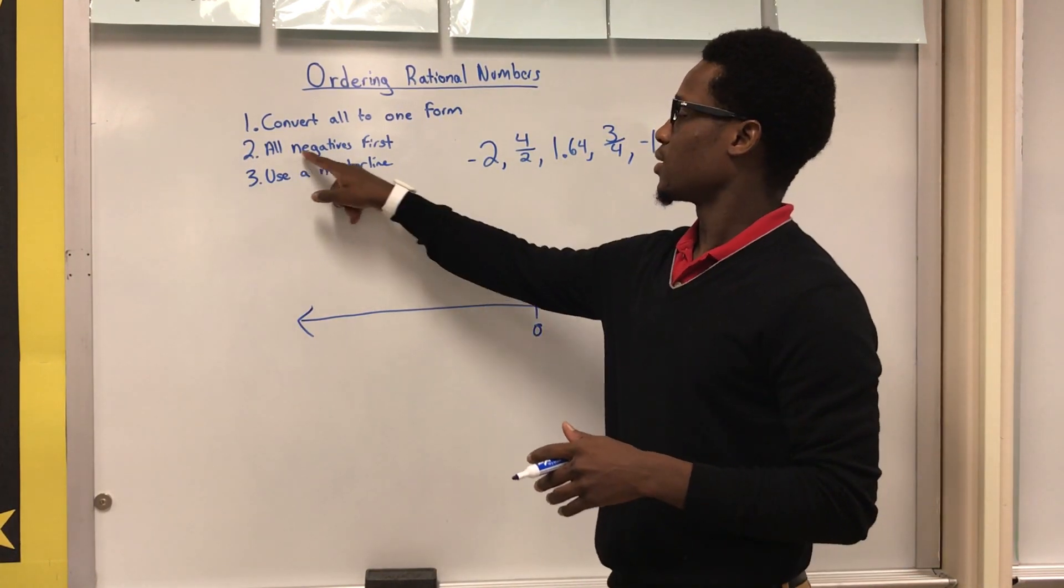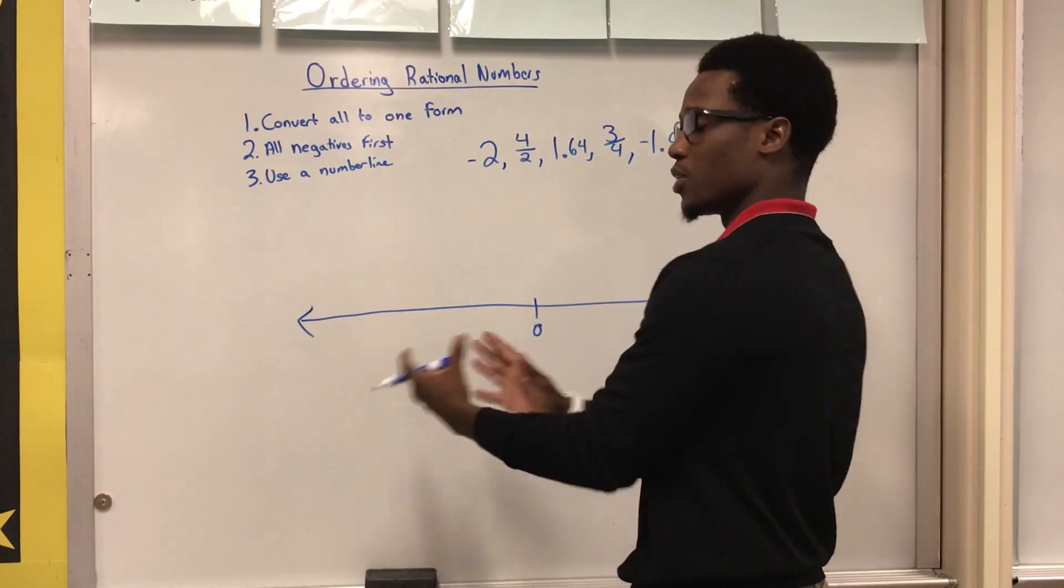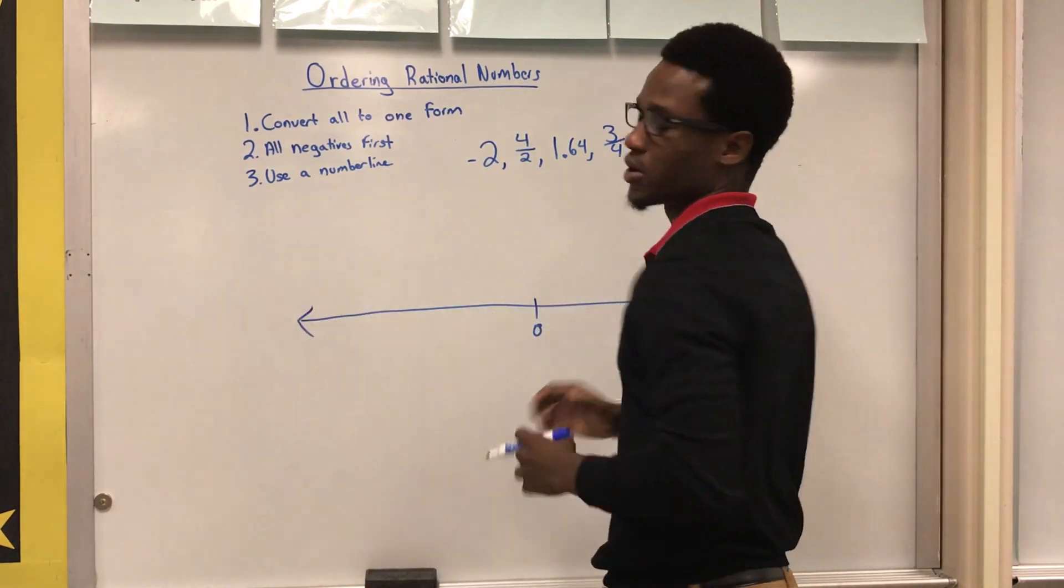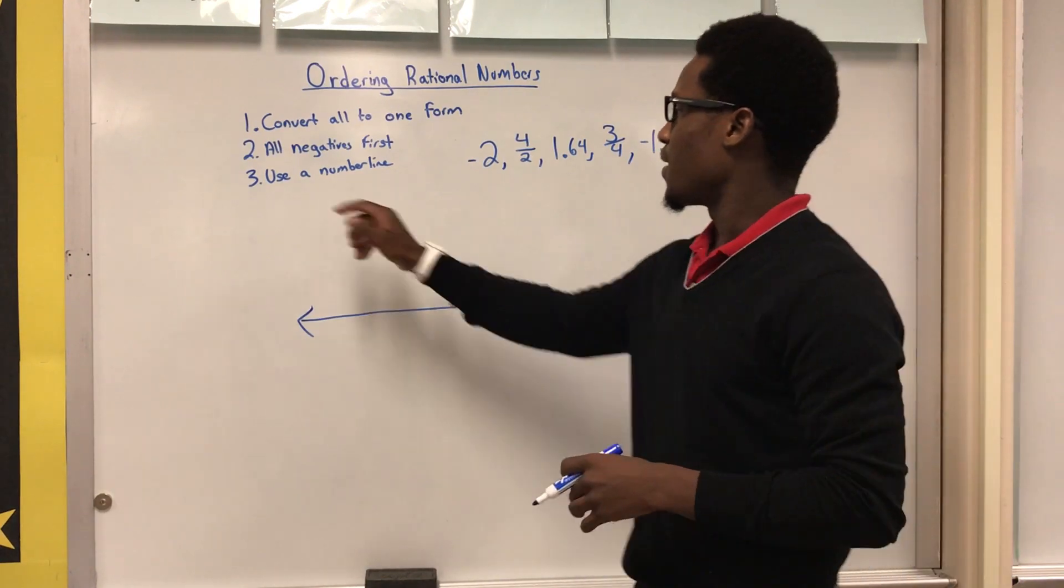The second thing I'm going to think about is to put all negative numbers first. On the number line, if you're going to order numbers, negatives start on the left and all the positives are going to be on the right. So it's going to be a good idea to start with those negative numbers and then next use a number line.